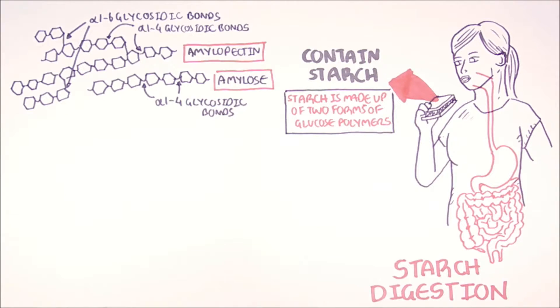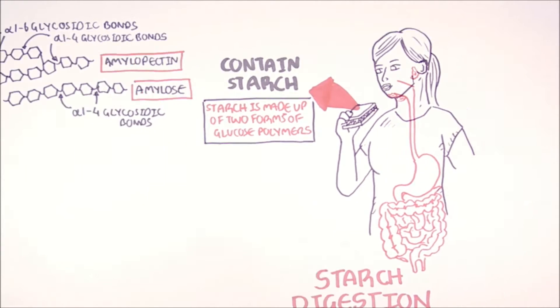So now let's see what happens when starch is ingested. What happens first is that the mouth will break down the starch, both physically and chemically. Physically by the jaws, teeth, and tongue. Chemically by the salivary glands.